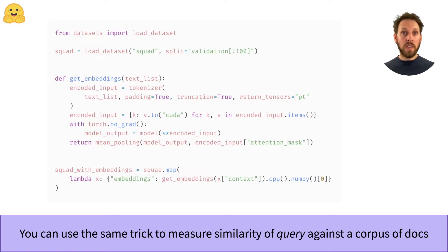To create a semantic search engine is actually quite simple in the datasets library. First, we need to embed all the documents. And in this example, we take a small sample from the squad dataset and apply the same embedding logic as before. This gives us a new column called embeddings, which stores the embeddings of every passage.